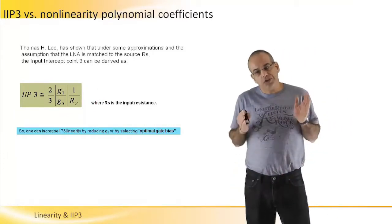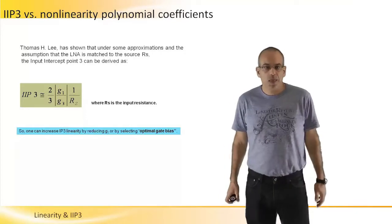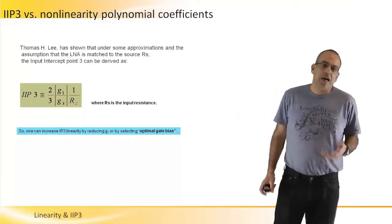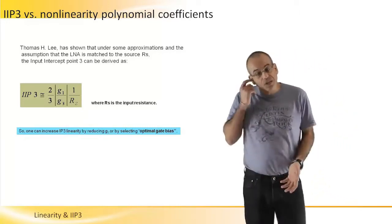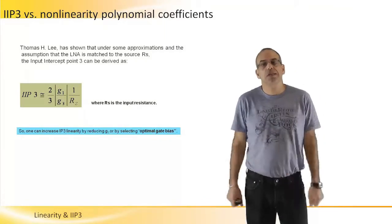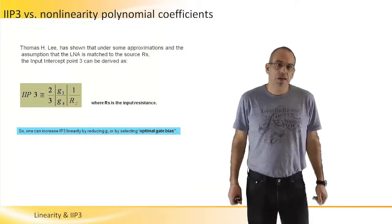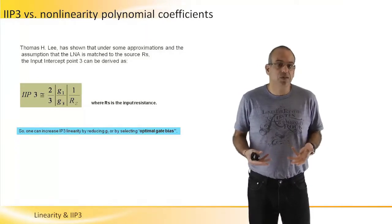And it will be two thirds of the G1 over G3 divided by RS. So one can increase the IP3 linearity by either increasing G1 or by reducing the coefficient G3. And we want to increase IP3 because we want to increase the linearity of the LNA.